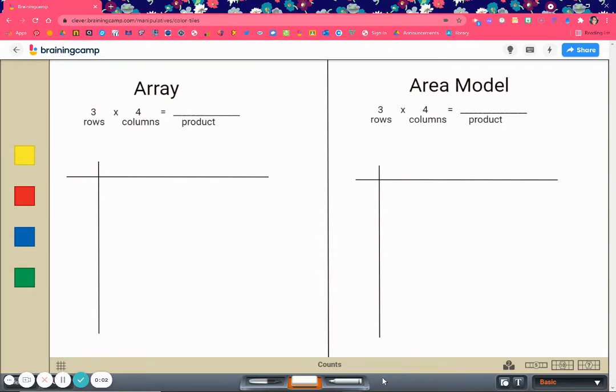Hello students, today I'm going to show you how to create an array and area model. First of all, you're going to see these lines that kind of look like a T. That's just a way to keep it organized because arrays and area models have to be organized in straight lines of rows and columns.